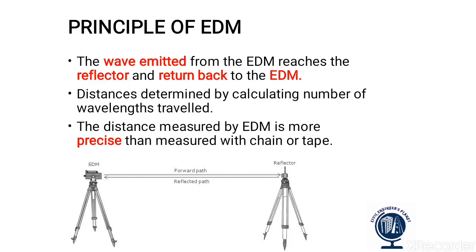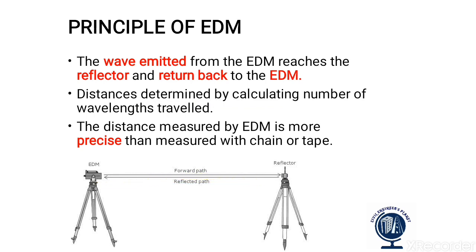Now we are going to discuss the principle of EDM. The wave emitted from the EDM goes to the reflector and returns back to the EDM. The distance is determined by calculating the number of wavelengths travelled. The distance measured by EDM is more precise than that measured with the chain or the tape.